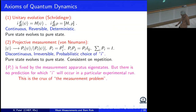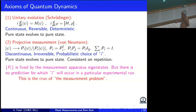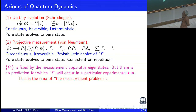A completely different axiom is given for measurement, typically a projective measurement described by von Neumann's prescription where the wave function basically reduces to one of its components. The E's are the usual projection operators, which square to themselves, and if you sum over all the projectors it gives identity. This step is discontinuous, irreversible, and the choice of i is probabilistic.